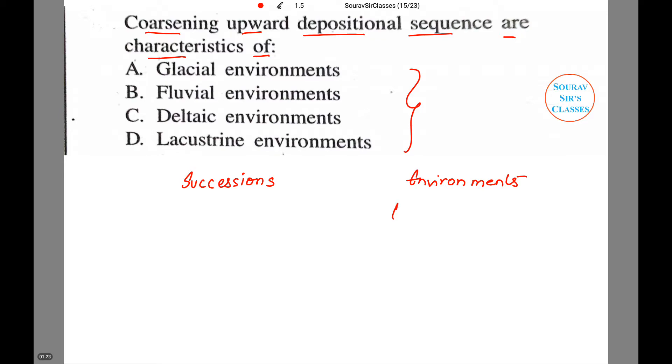Now in case of the first is glacial environment. So if the environment is glacial environment, then the particles are not well rounded. So here I'll just give you the crux of glacial environment with regard to the particle.